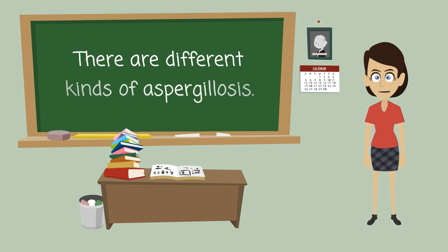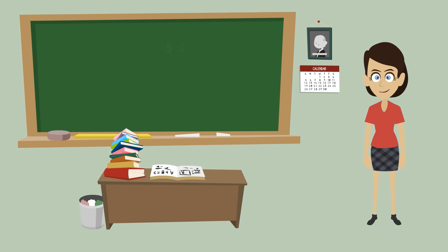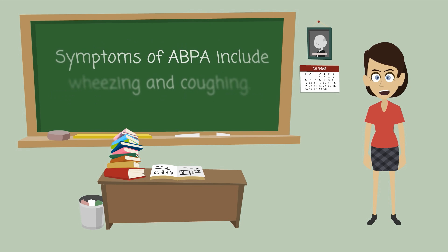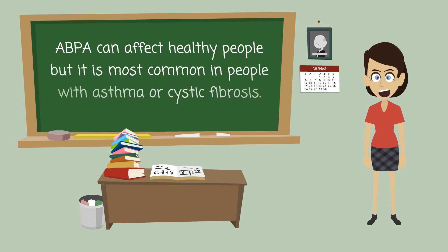There are different kinds of aspergillosis. One kind is allergic bronchopulmonary aspergillosis, also called ABPA. Symptoms of ABPA include wheezing and coughing. ABPA can affect healthy people, but it is most common in people with asthma or cystic fibrosis.